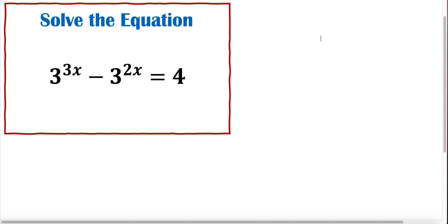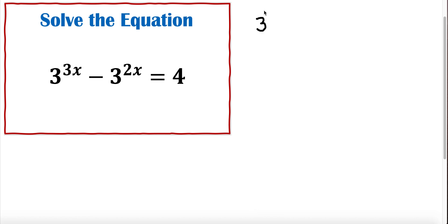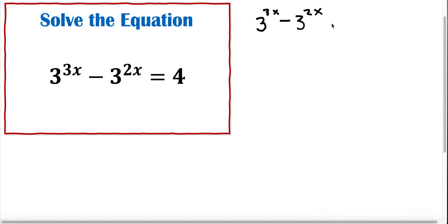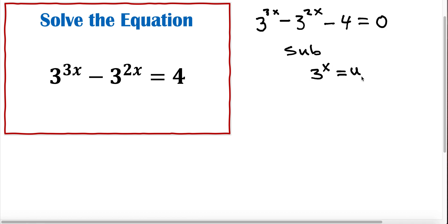We have the given equation here and we want to solve it. Let me rewrite this one: it's 3 to the exponent 3x minus 3 to the exponent 2x, and I'm moving the 4 to the other side, so minus 4 is equal to 0. Let me substitute here — let 3 to the x equal u — and now I can write u cubed minus u squared minus 4 is equal to 0.